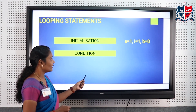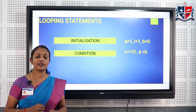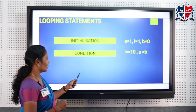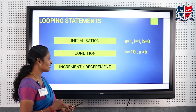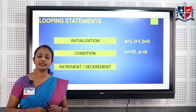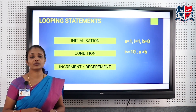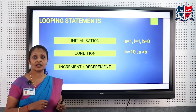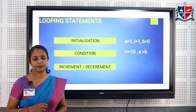Normally the condition can be applied in C programming language with the help of various relational operators. The third part is increment or decrement — we have to either increment or decrement the looping variable. These are the basic three steps required for any kind of looping.